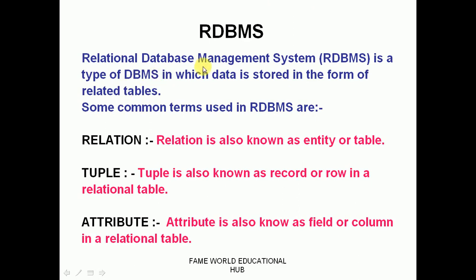RDBMS — Relational Database Management System — is a type of DBMS in which data is stored in the form of related tables. In RDBMS, the database is stored in tabular format, meaning rows and columns. Rows are horizontal and columns are vertical.